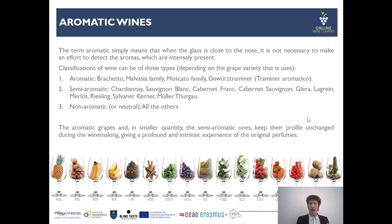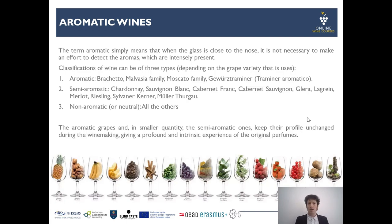Starting with aromatic wines: the term 'aromatic' simply means that when the glass is close to your nose, you can easily perceive a certain amount of aroma without great effort. Depending on intensity, we can categorize three different levels of aromatic wines. Aromatic wines come from varieties like Fraschetto, Malvasia, the Moscato family, and Gewürztraminer. Semi-aromatic wines typically come from Chardonnay, Sauvignon Blanc in New World style, Cabernet Franc, Cabernet Sauvignon, Glera (the main variety for Prosecco), Riesling, Silvaner, Kerner, and Müller-Thurgau.